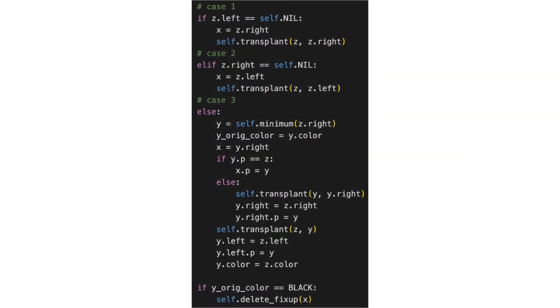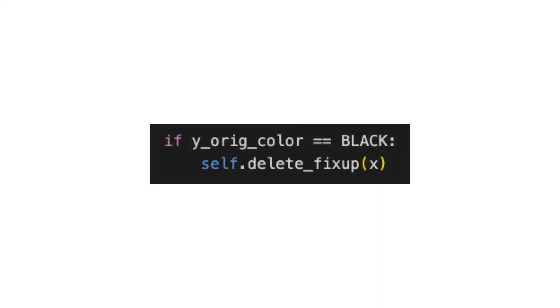Here's the delete code. Ignore the details. I know it's small, but at the very bottom we have two lines. When our original color value is black, we call delete-fix-up passing in x.